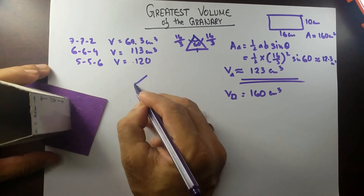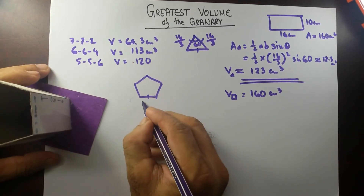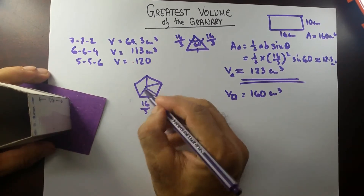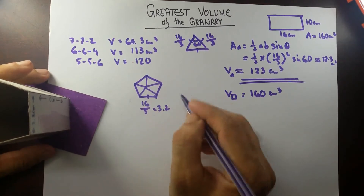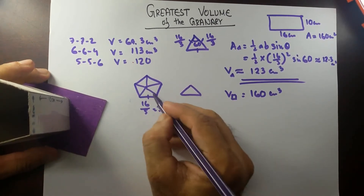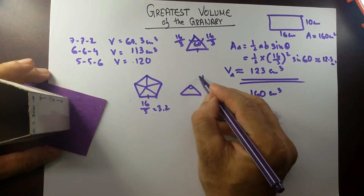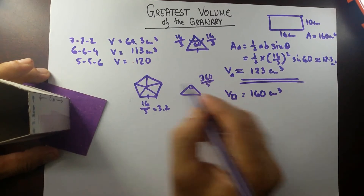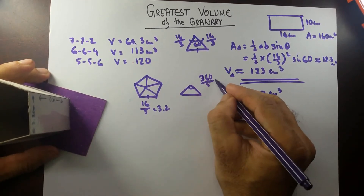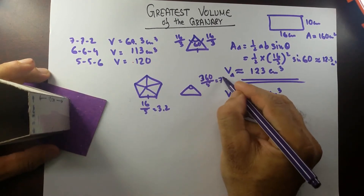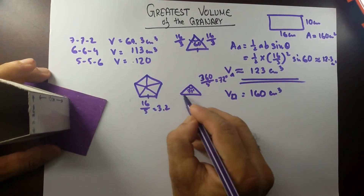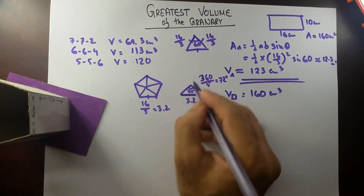For a regular pentagon prism, each side would be 16 divided by 5, which is 3.2 cm. To calculate the area of a regular polygon, each central angle is 360 divided by 5, which gives 72 degrees. If this angle is 72 degrees, then the side length is 3.2, and we need to find the height of the triangle formed from the center.